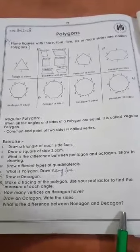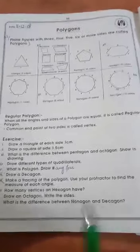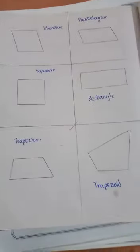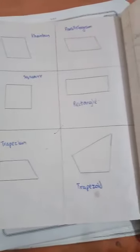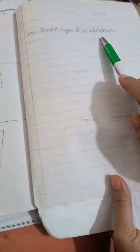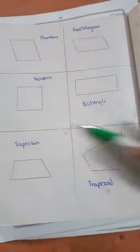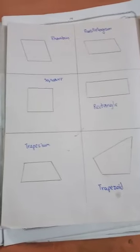Now I am showing you how to do the work in your copy. For question number 4, first you have to write the question on the line page: draw different types of quadrilaterals. Then draw the answer on the blank page — you have to draw six boxes and draw one quadrilateral in each box, then write its name.